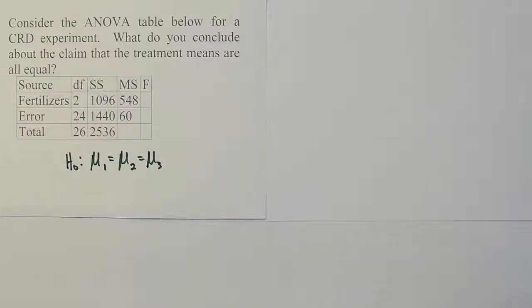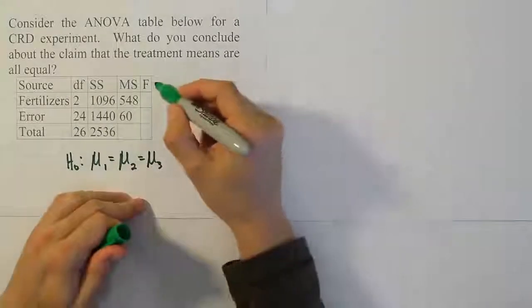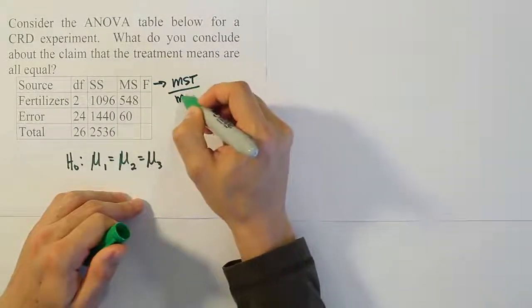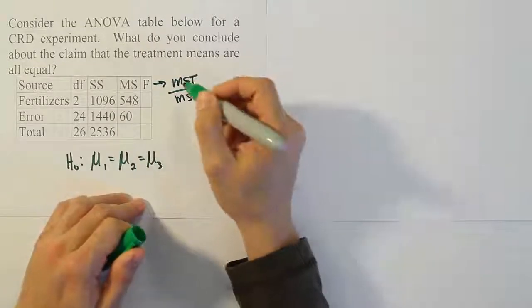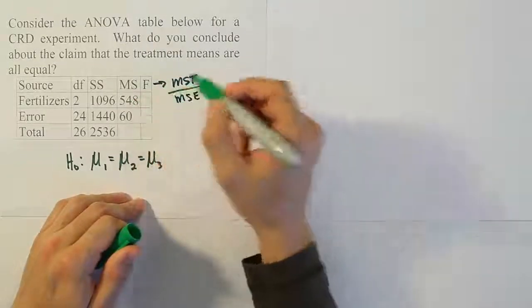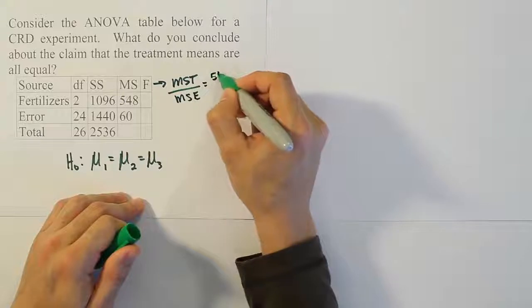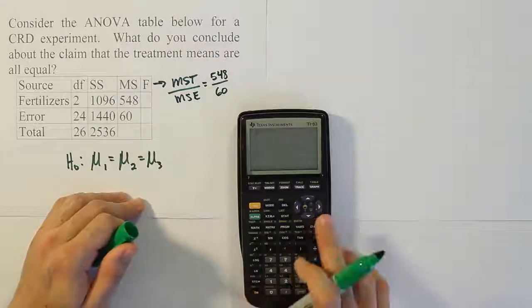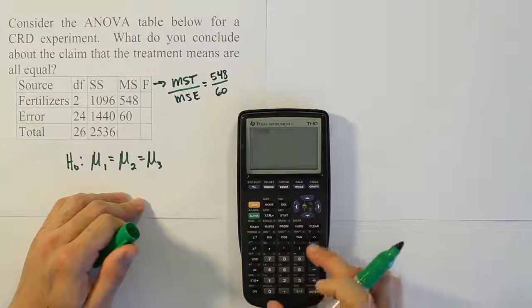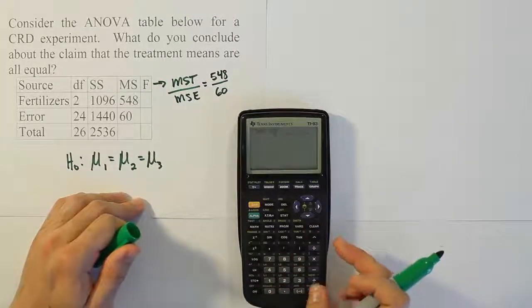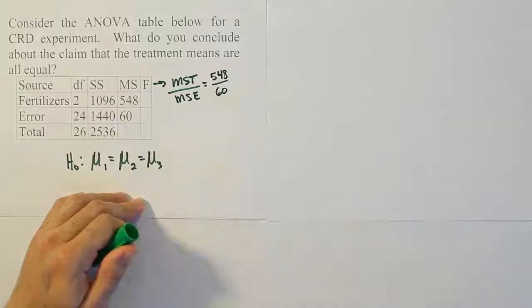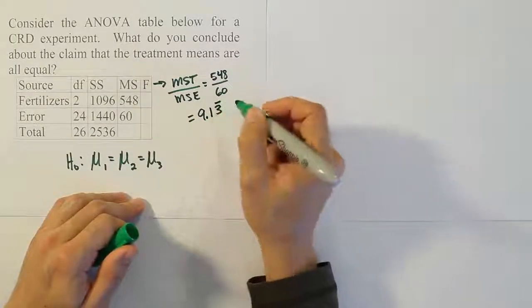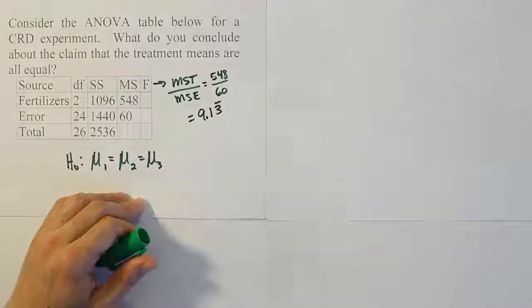To get the F value it's pretty easy because we happen to know that the F test statistic is MST over MSE. So I'm just going to plug in those numbers that are provided in the table already. So we have 548 over 60. Let's see what that turns out to be. 548 divided by 60, we end up with the answer 9.13 repeating. So that is our test statistic F.